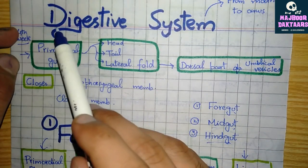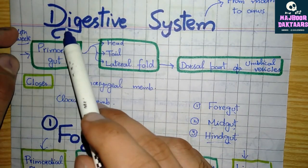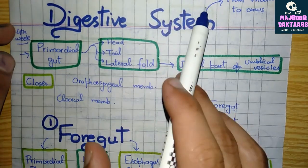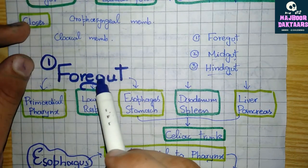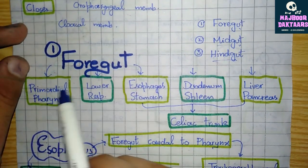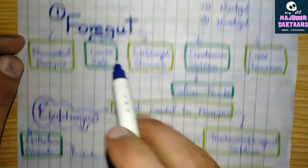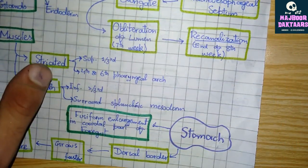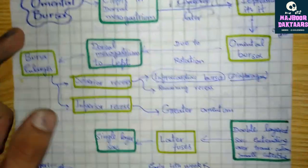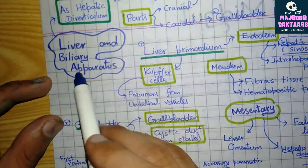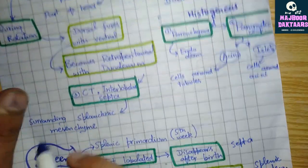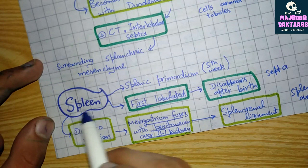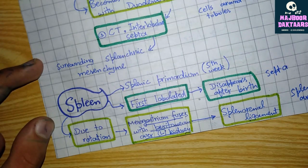Hello, this is SNE Min and today we're going to talk about the digestive system development. We're going to talk about the foregut and its different derivatives, the development of esophagus, the development of stomach, the development of omental bursa, the development of duodenum, the development of liver, biliary apparatus, and the development of pancreas along with the development of the spleen. So let's start.